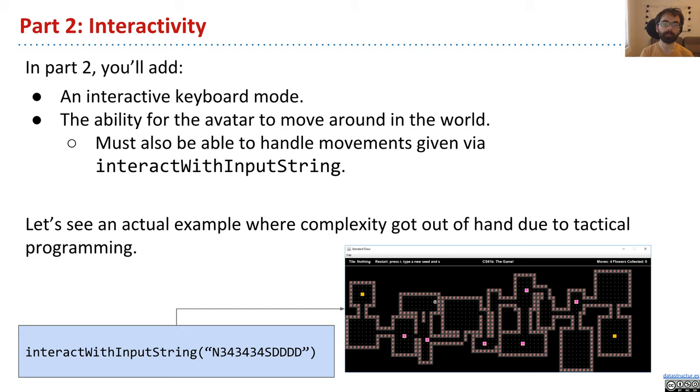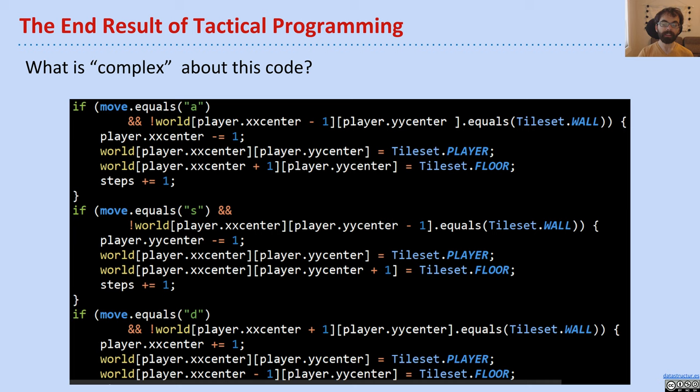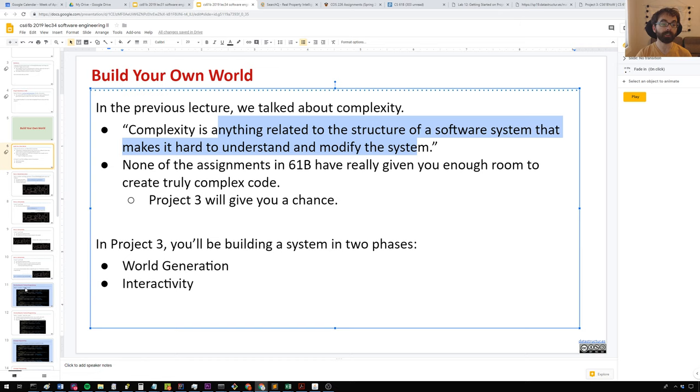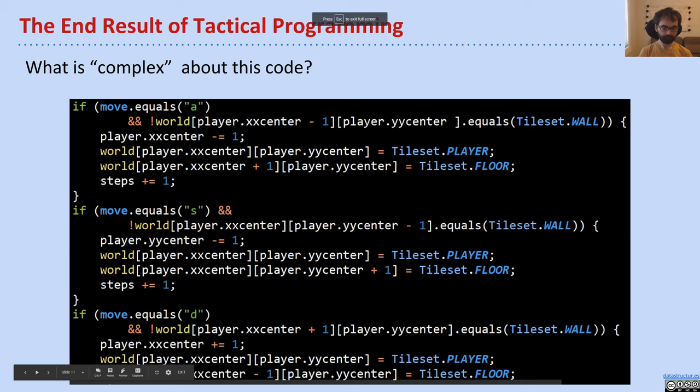So let's see an example of an actual project that someone in 61B last spring had, where they tried to do what we call tactical programming in the previous lecture. They just kept trying to patch things up so that it worked. And in the end, they ended up with a piece of code that I consider deeply unsettling. And the reason that it's unsettling is because it's very complicated, way more complicated than it needs to be. And so what I'd like you to do now is take a minute or two to reflect on what is complex about this code. And recall that when we say complex, we mean anything related to the structure that makes it hard to understand and hard to modify the system.